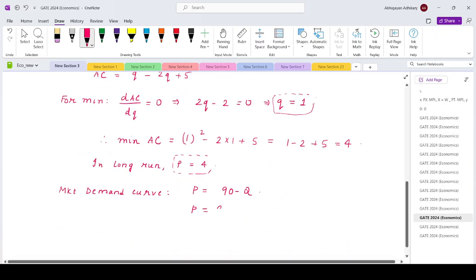The total Q would be N times small Q in the long run. Q is 1 in the long run, so this is N. P is 4, so 4 equals 90 minus N. That means N equals 86.